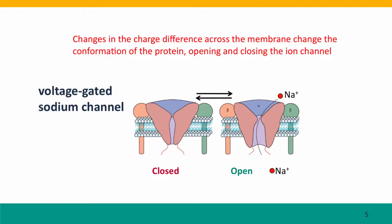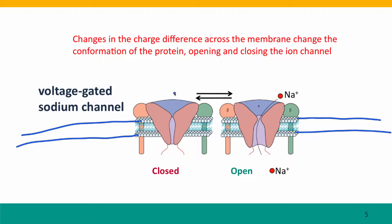Finally, here's another protein we saw earlier: the voltage-gated sodium channel that functions in our nervous system. This is the membrane, and we have two versions of the protein shown. In one version the protein channel is closed — no sodium ions can pass through it. In the other version the channel is open, and sodium ions can pass from whichever side the concentration is high to the side where the concentration is lower.